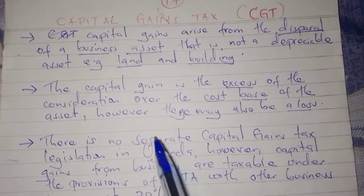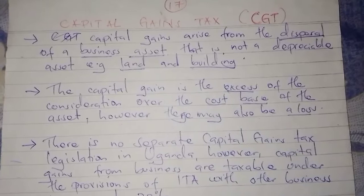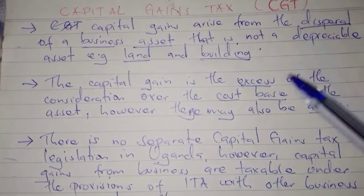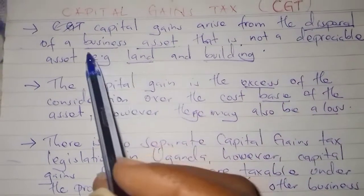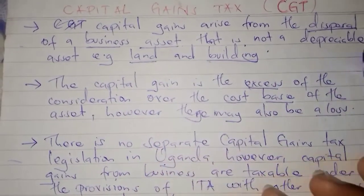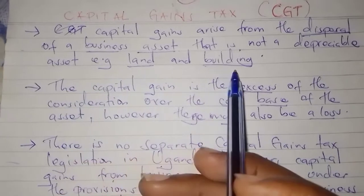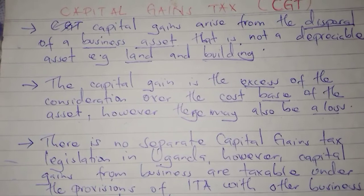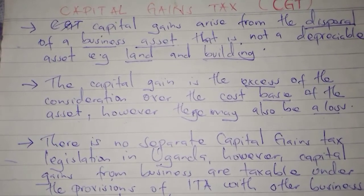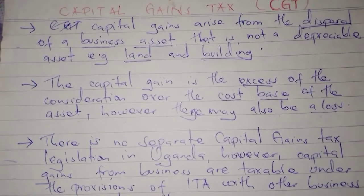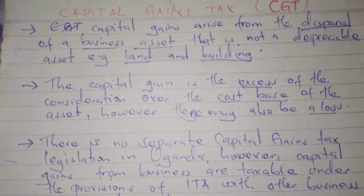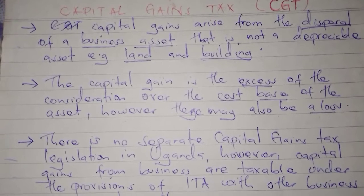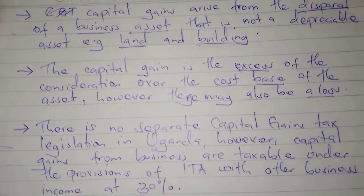Let's look at capital gains tax in business income. Capital gains arise from the disposal of a business asset that is not a depreciable asset — for example, land and buildings. In business income, we have two types of assets: depreciable assets, which are subject to wear and tear, and business assets, which are subject to capital gains tax.